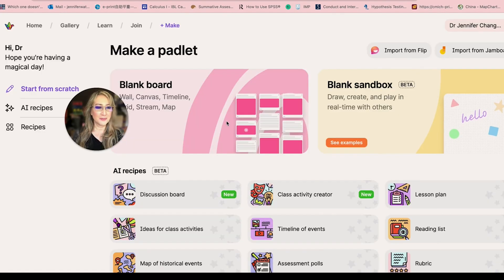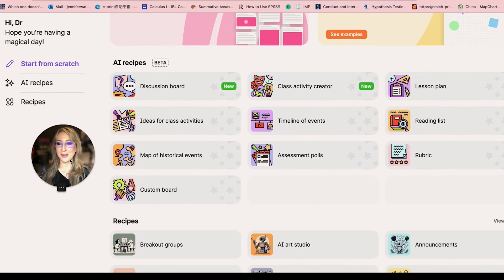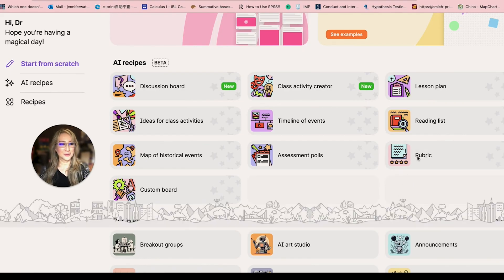If we go back to the dashboard here, we can import from Jamboard. We also know that Flip is being discontinued and a lot of people are lamenting that, so you can import from Flip. Let's look at the AI beta version. I'm in the process of putting another book together and I'll make an announcement about what that book's about, but let's have a look at the rubric.